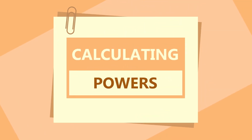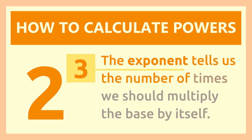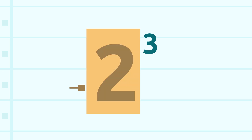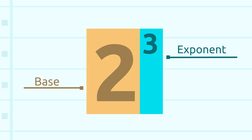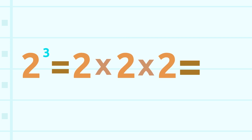Now let's see how we calculate powers. The exponent tells us the number of times we should multiply the base by itself. Let's look at the example on the screen: two to the power of three. The base is two and the exponent is three, which is the number of times we multiply the base. So two to the power of three is two times two times two, which equals eight.